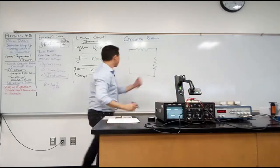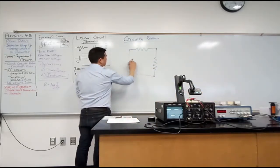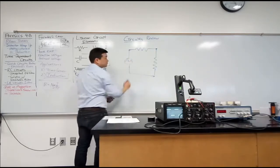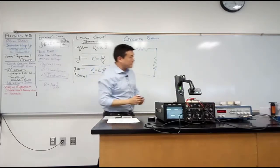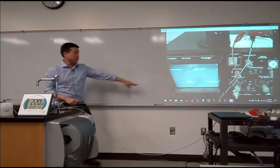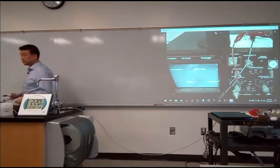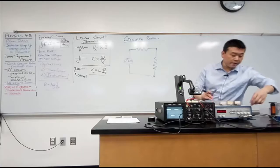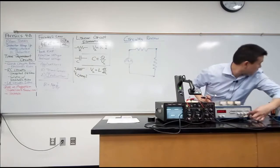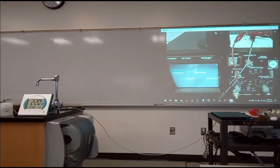The function generator is generating a square wave, and that's actually what you are seeing on the oscilloscope right now — that's the function generator signal. If I turn it down or up, then you see it changing.